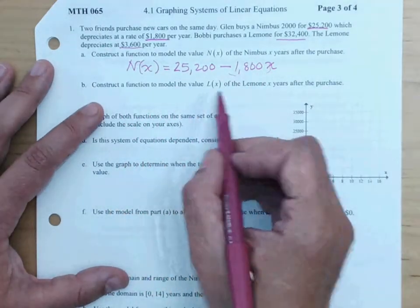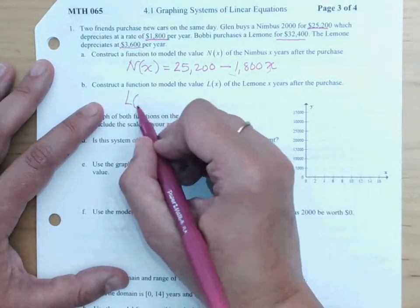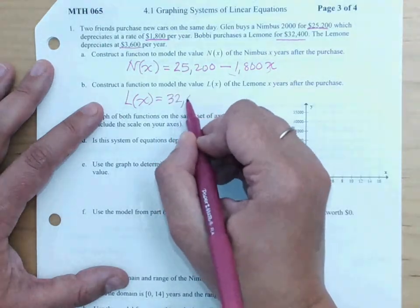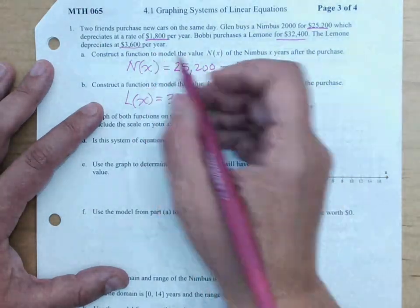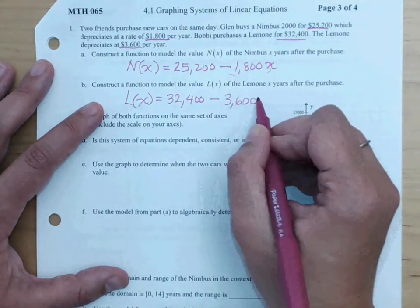Construct a function to model the Limone value, so that's L(x) equals the starting price $32,400 minus $3,600 every year.